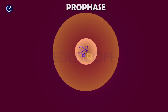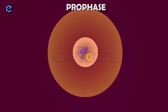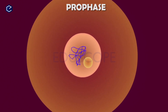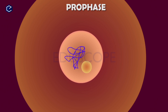Now let's talk about the cell. The cell contains genetic material. In normal conditions, this genetic material exists as chromatin. In prophase, the chromatin condenses — it becomes short, coiled, and compact.